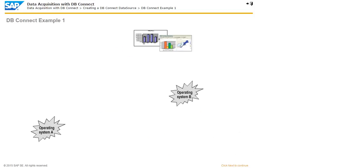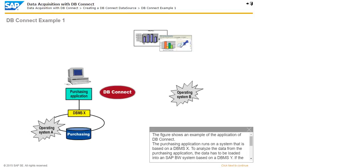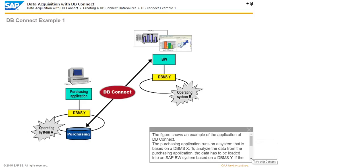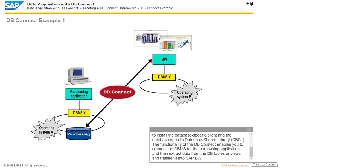The figure shows an example of the application of dbConnect. The purchasing application runs on a system that is based on a dbMSx. To analyze the data from the purchasing application, the data has to be loaded into an SAP BW system based on a dbMSy. If the dbMSy is the same as dbMSx, you do not need to install the database-specific client and the database-specific database shared library (dbSL). The functionality of dbConnect enables you to connect the DBMS for the purchasing application and then extract data from the database tables or views and transfer it into SAP BW.